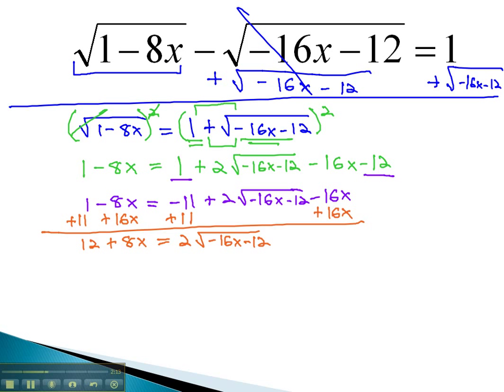12 plus 8x equals 2 times the square root of negative 16x minus 12. We have the option to get rid of the 2 in front, and we can divide every term by 2 without having to worry about ugly fractions.